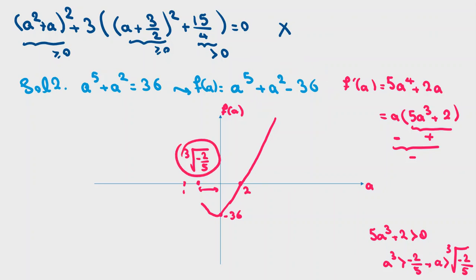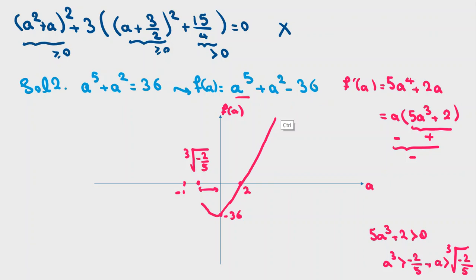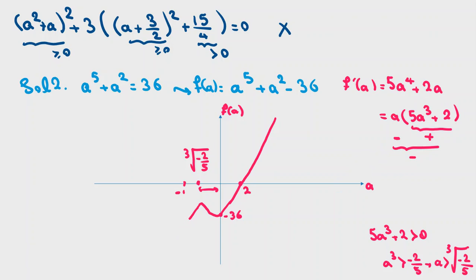At the local maximum in that decreasing region, f(a) reaches a value between 0 and negative 1, which is still negative, nowhere near positive. Since negative 36 is the value at zero and the function only dips lower around that region, f of a does not cross zero there.